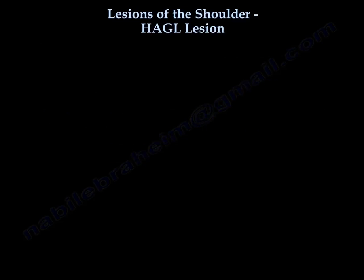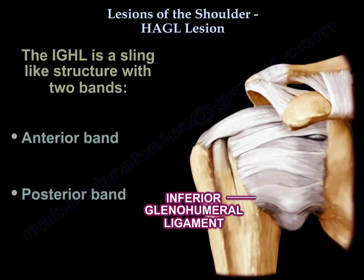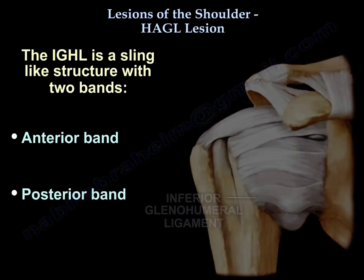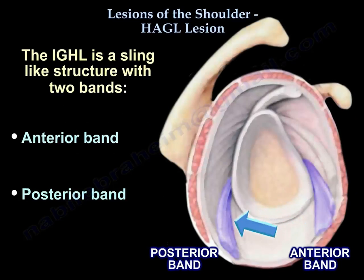The inferior glenohumeral ligament, which is the most important and strongest ligament, limits anterior inferior subluxation. This ligament is a sling-like structure with two bands — the anterior and the posterior. The anterior band is stronger and thicker.